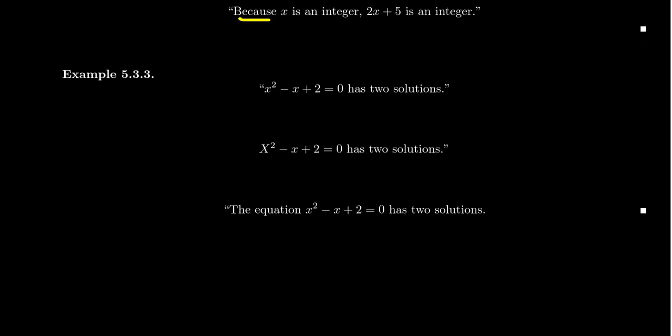And then as a last example here, X squared minus X plus 2 equals 0 has two solutions. This is an equation. It's still mathematical symbols. We should not start the sentence that way. Capitalizing it doesn't make it any better, right? Because again, that changes the meaning.